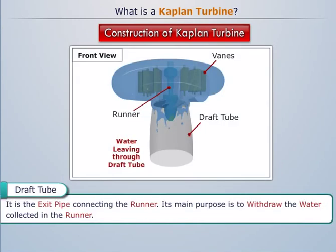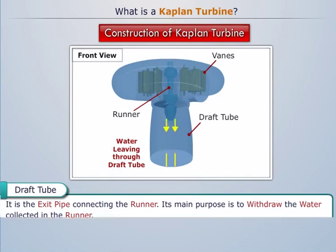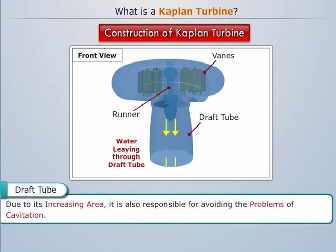Draft tube: It is the exit pipe connecting the runner. Its main purpose is to withdraw the water collected in the runner. Due to its increasing area, it is also responsible for avoiding the problems of cavitation.